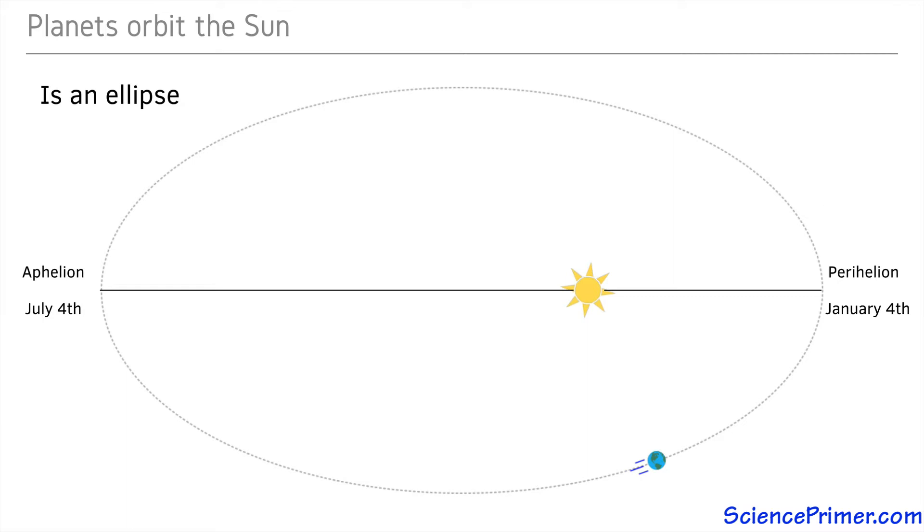The difference is not as great as shown in this diagram. We are about 146 million kilometers from the sun at perihelion and about 152 million kilometers at aphelion, a difference of only about 4%.